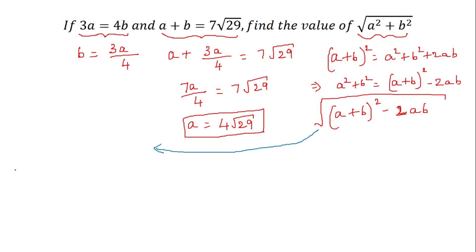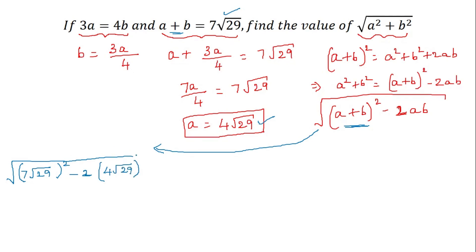So we have the square root of a plus b whole squared minus 2ab. Here a plus b is 7 root 29, so that term becomes 7 root 29 whole squared. Then minus 2 into a, which is 4 root 29, into b, which is 3a by 4, that is 3 times 4 root 29 by 4. The two 4s cancel, leaving us the other terms to evaluate.